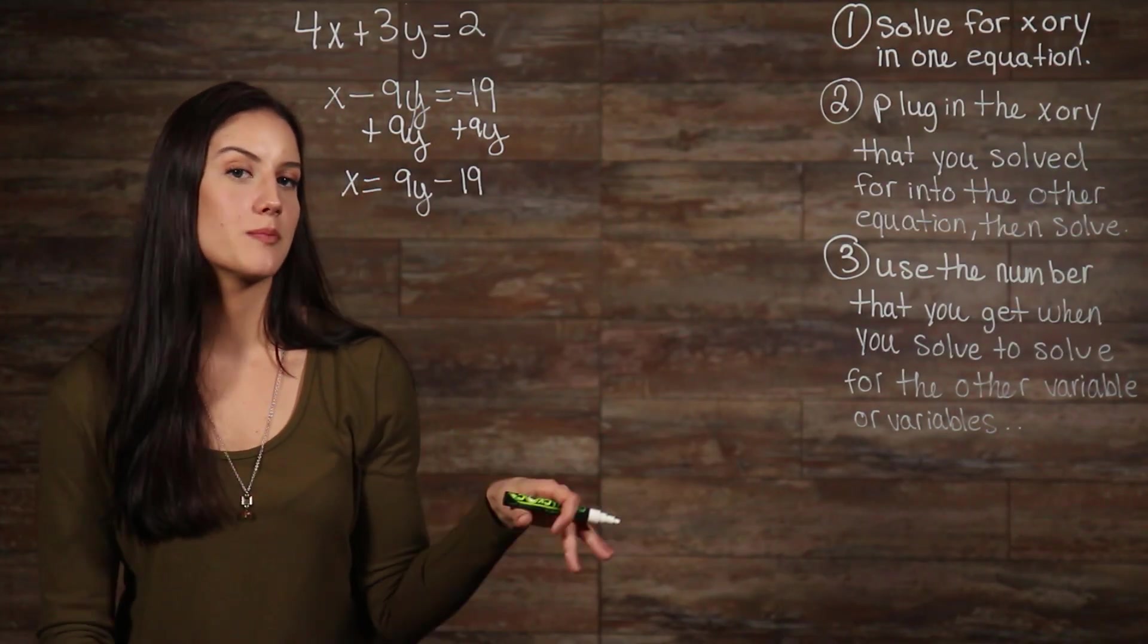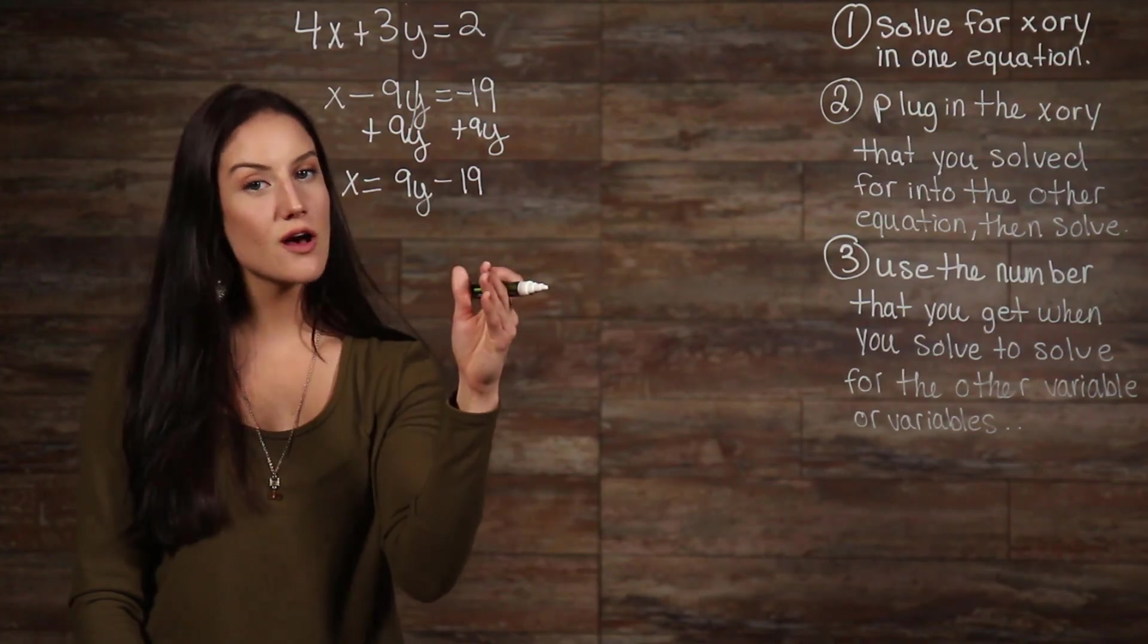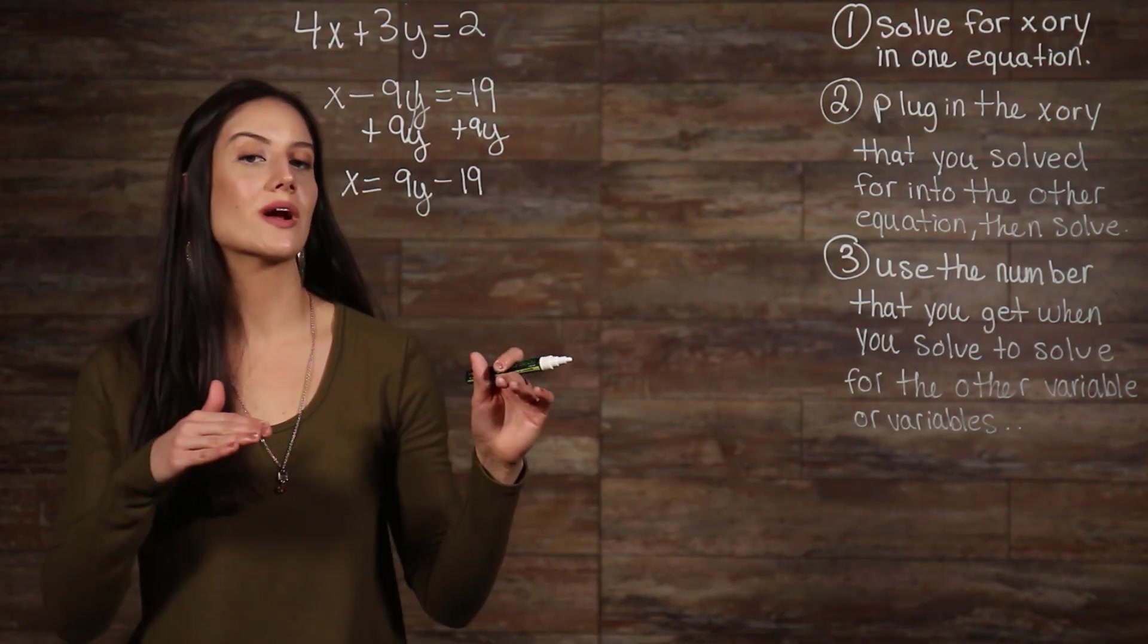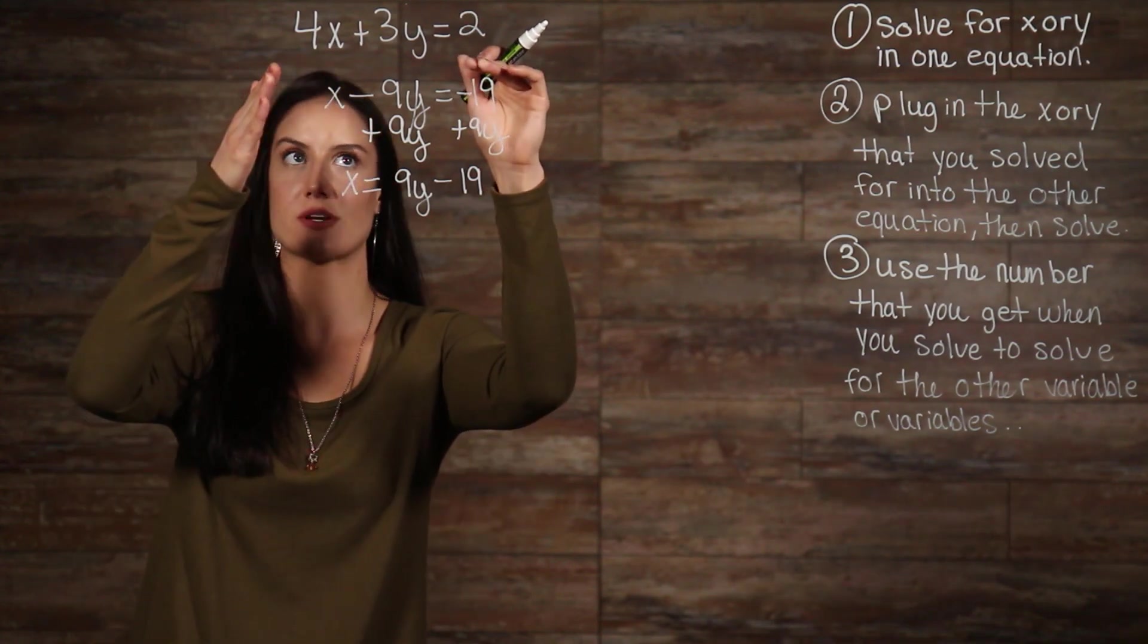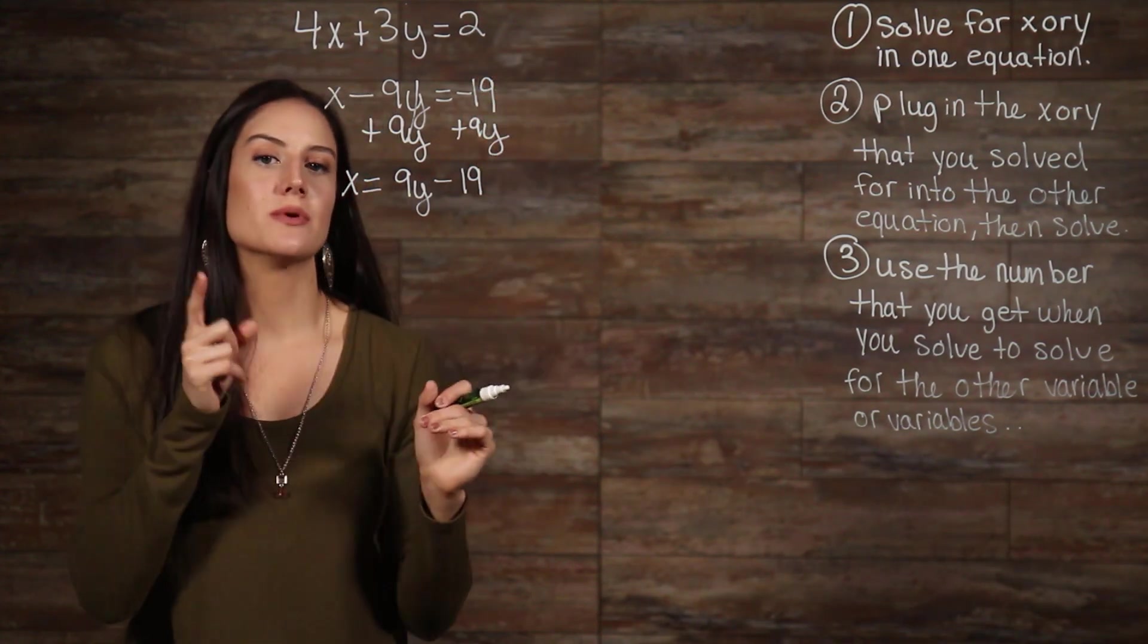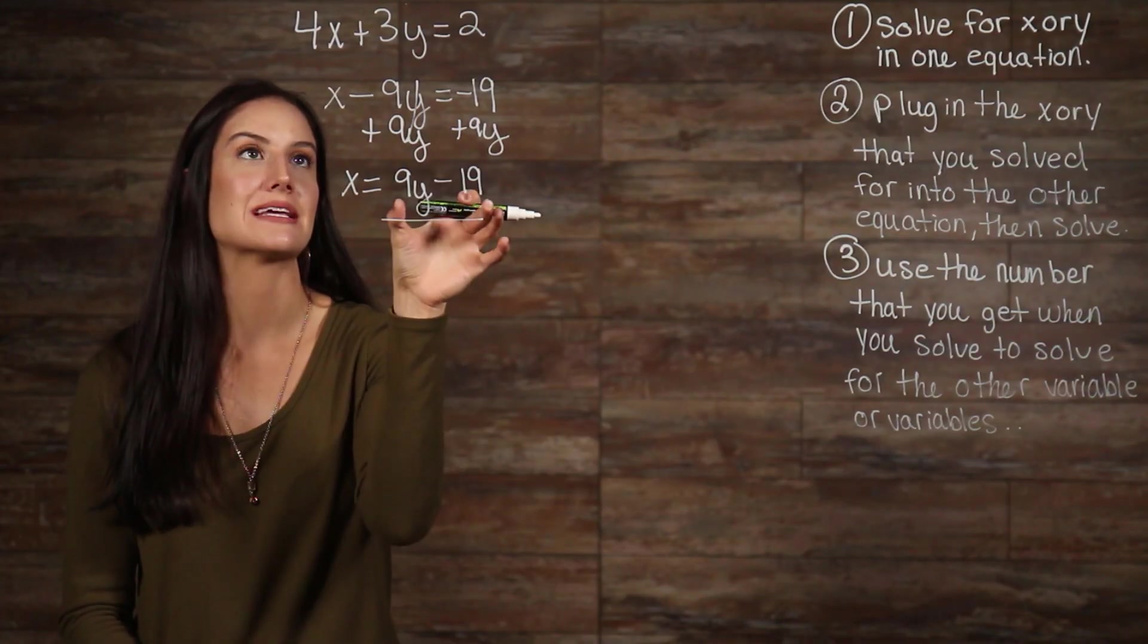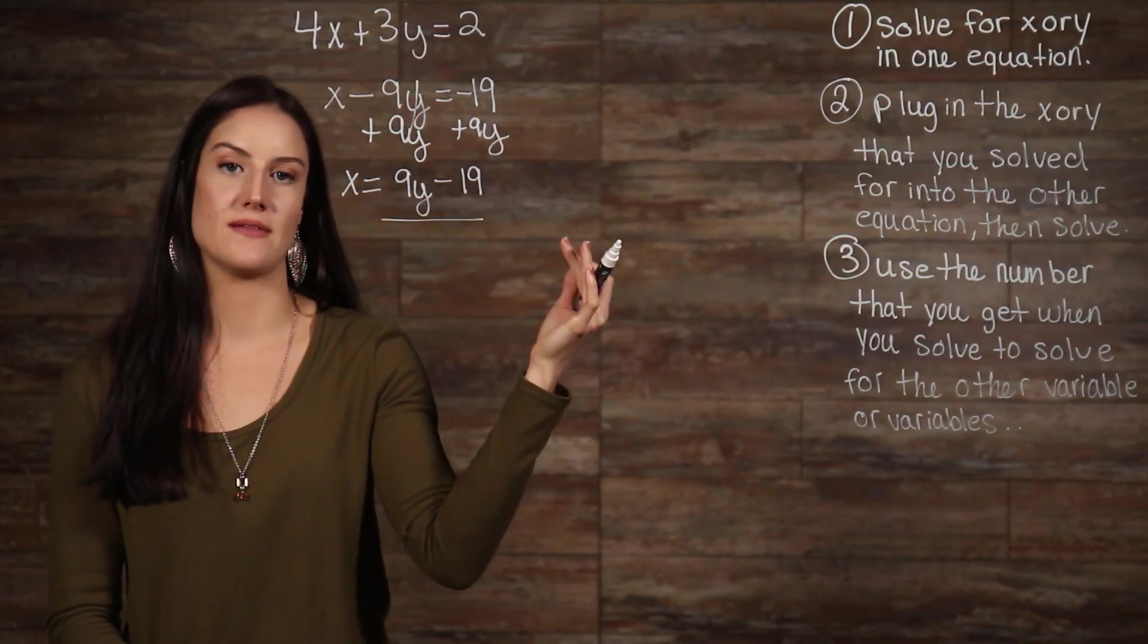Step 2 now tells us to plug in the variable that we have solved for into our other equation, then solve. So, we're going to plug our x into our 4x plus 3y equals 2. Because we know that x is equal to 9y minus 19, we'll plug this into our x value here, and then solve.